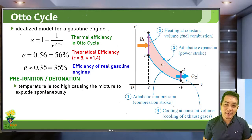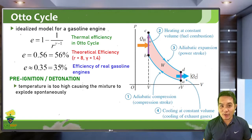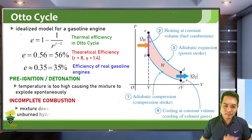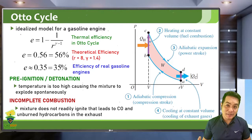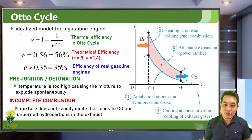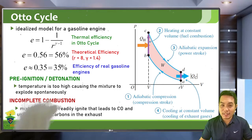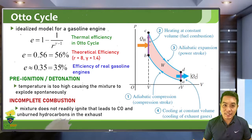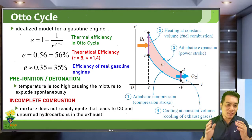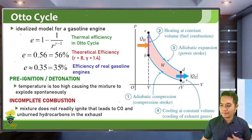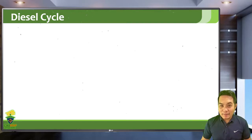Spontaneous explosion of the air-fuel mixture can disrupt the four-stroke cycle and lead to engine inefficiency. Another problem is incomplete combustion — if low-octane gasoline is used, the mixture may not readily ignite from the spark plug, leading to unburnt fuel containing carbon monoxide and unburned hydrocarbons in the exhaust. This is why gasoline engines should use premium high-octane gasoline.